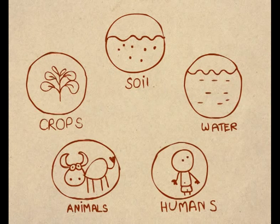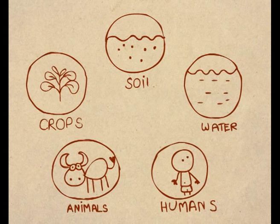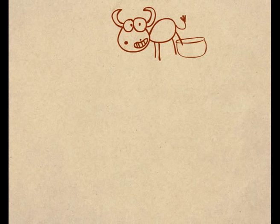But in an organic farm, farming is done in a natural way. Cow dung and urine is fed to the soil as nutrient. This is a natural fertilizer for soil and plants.